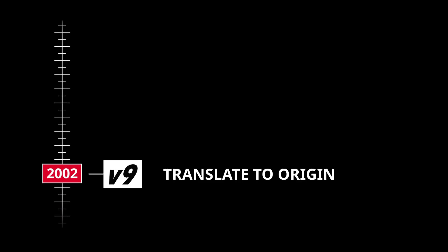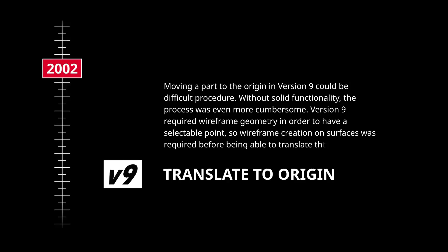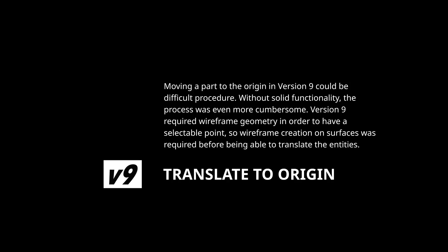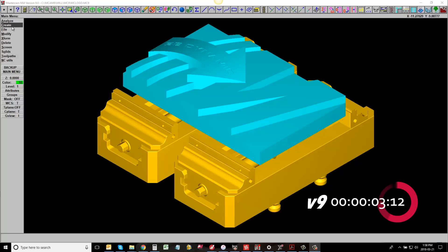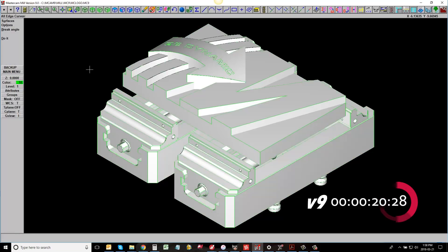Moving a part to the origin in version 9 could be a difficult procedure. Without solid functionality, the process was even more cumbersome. Version 9 required wireframe geometry in order to have a selectable point, so wireframe creation on surfaces was required before being able to translate the entities.